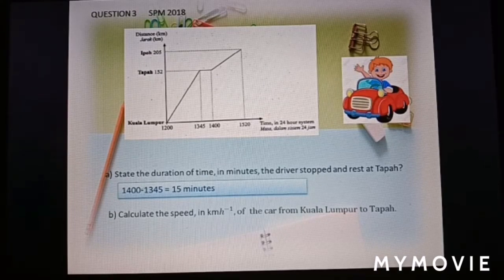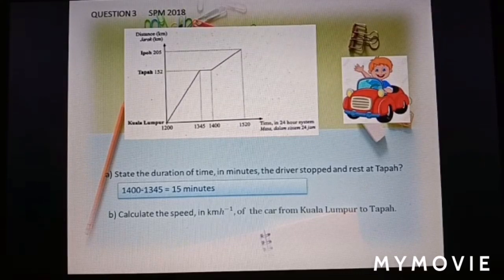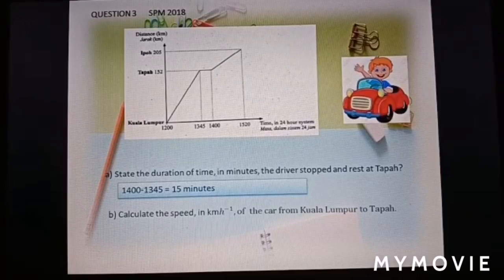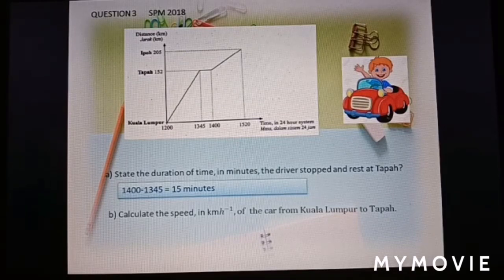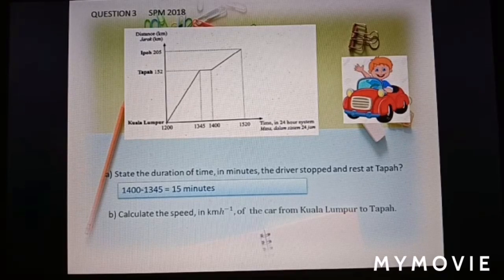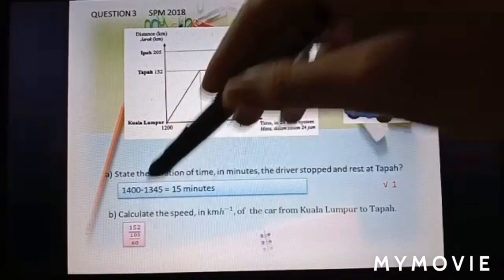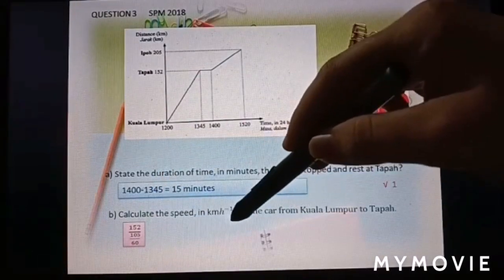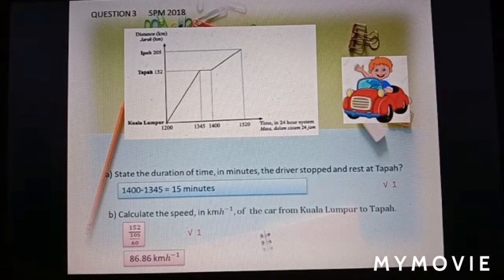Part B. Calculate the speed in kilometer per hour of the car from Kuala Lumpur to Tapah. Kuala Lumpur to Tapah. So, speed in kilometer per hour, speed equal to distance over time. Distance is 152, time is here. So, if 13:45 minus 12:00 means 12 o'clock to 1:45 PM, the duration of time is 1 hour 45 minutes. Or we change to minutes is 105 minutes. So, speed equal to 152 divided by the duration of the time here, 105 over 60. You must change unit to hour because the unit here is hour. So, change minute to hour. The speed is 86.86 km per hour.